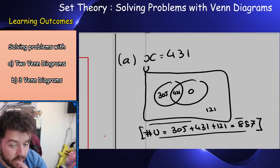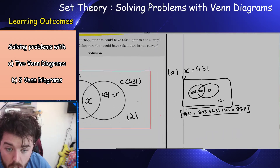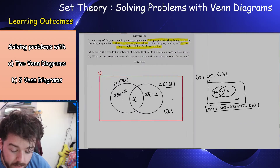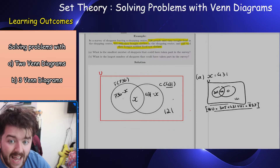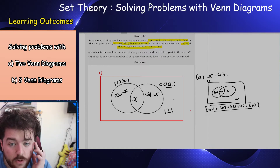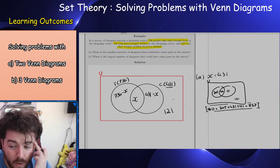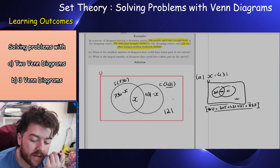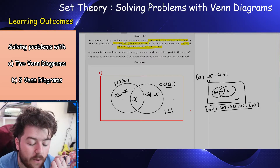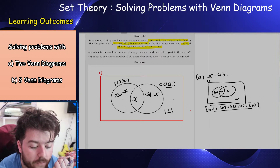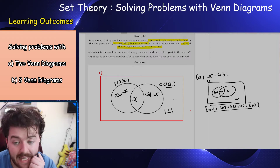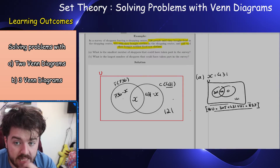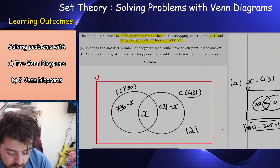So 305 plus 431 plus 121 equals 857. That is my smallest value — the smallest number of people who took part in the survey. This is a tricky question because it's logic-based and would be a harder example than you'd typically get in the exam.